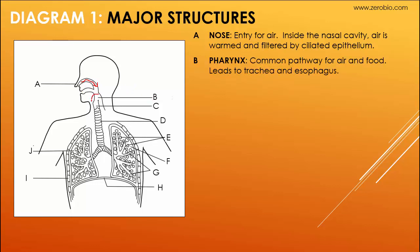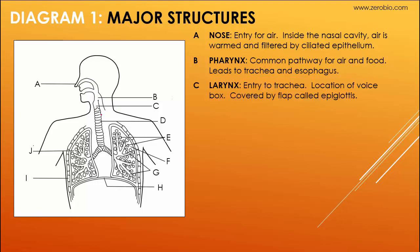B is the pharynx — it's a common pathway for air and for food, and it leads down into the trachea or down into the more dorsal tube, which is the esophagus. C is the larynx. This is the entryway into the trachea, and it's also the location of the voice box. It's covered by a flap called the epiglottis, which will block this area when you swallow food so that food goes down the esophagus and not into the trachea.